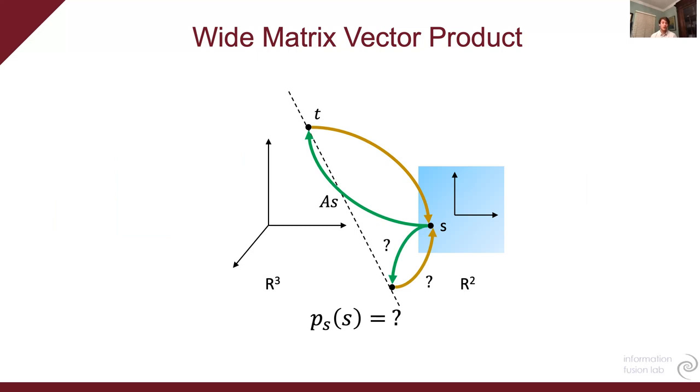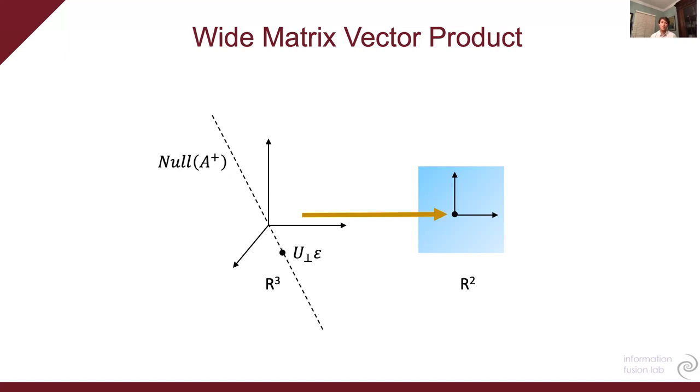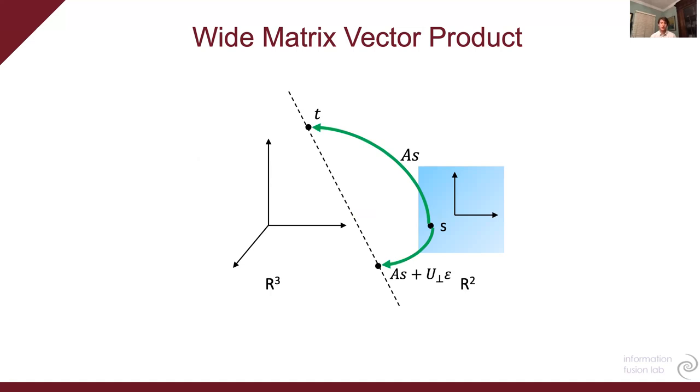However, this isn't a unique solution. In fact, there's a space of solutions that map to the exact same S. And this space of solutions is characterized by the null space of the pseudo inverse of A. So again, we use this orthogonal component called U perpendicular epsilon to index into this null space. And when we add this orthogonal component to an existing solution, which we fix at AS, then we can uniquely identify any point on this space of solutions.